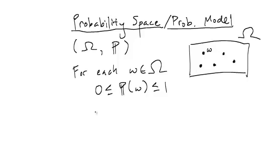And the other requirement that the probabilities of all the outcomes sum to one, we would write that by saying the sum over all the little omega, the outcomes that are in the sample space, of probability of omega, this thing needs to equal one.